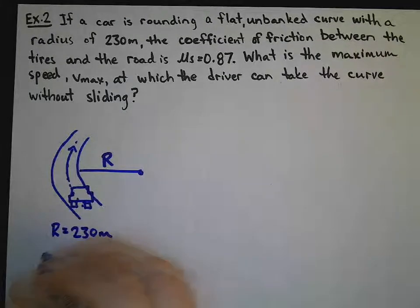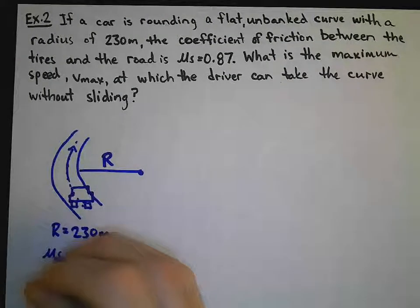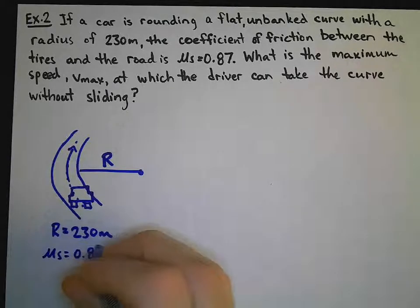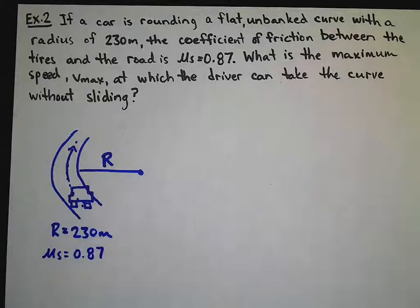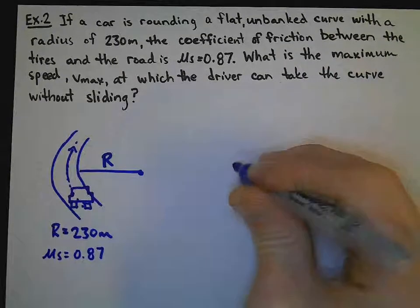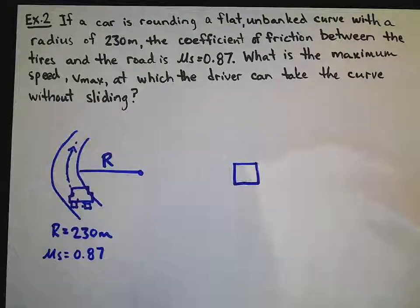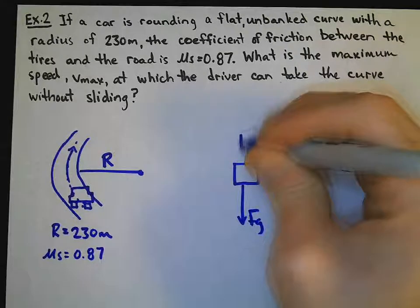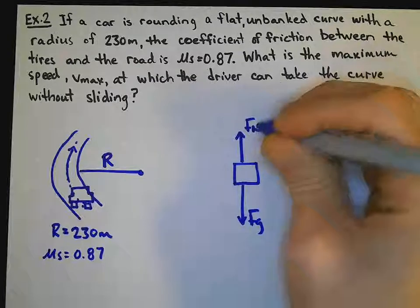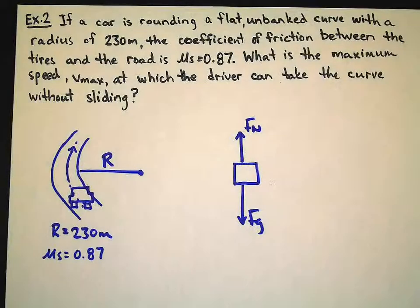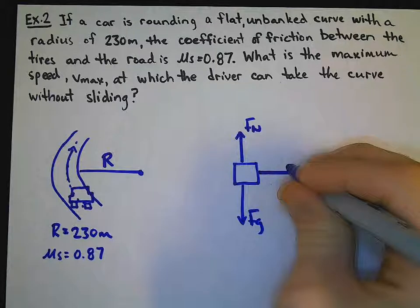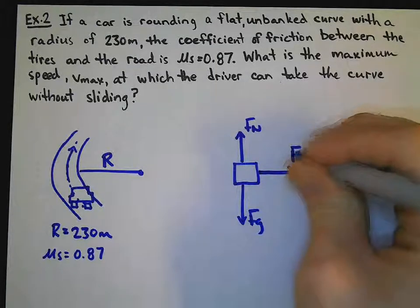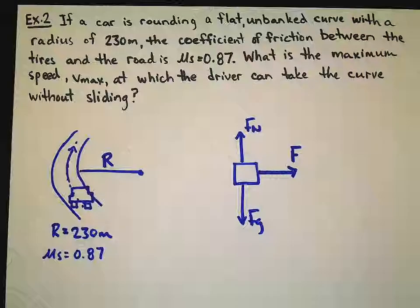In this question, I'm also given mu s as 0.87. That's all the information that I'm given. If I take a look here at my free body diagram, I know that my gravitational force and the normal force will cancel each other out. And I have my force acting in the center direction.